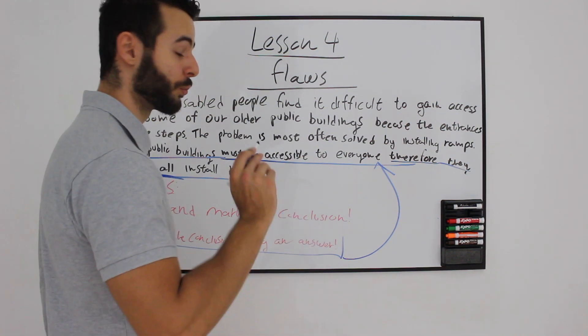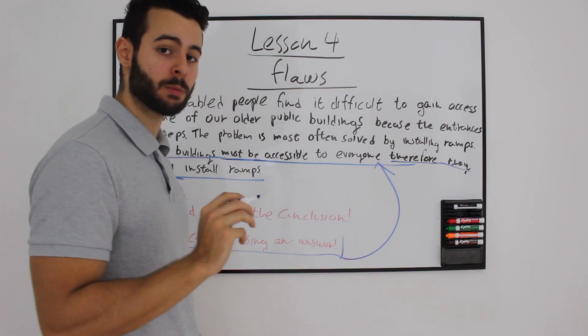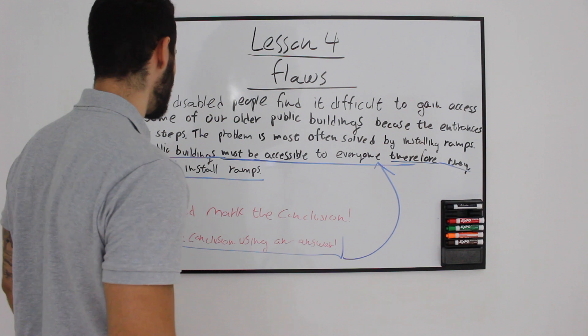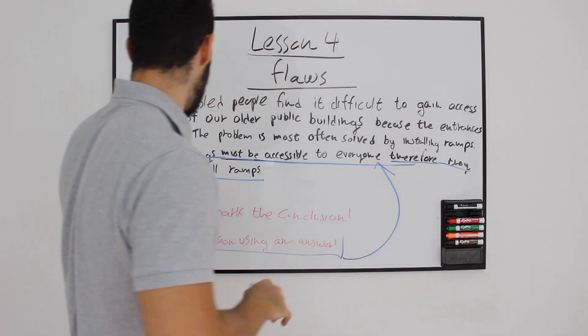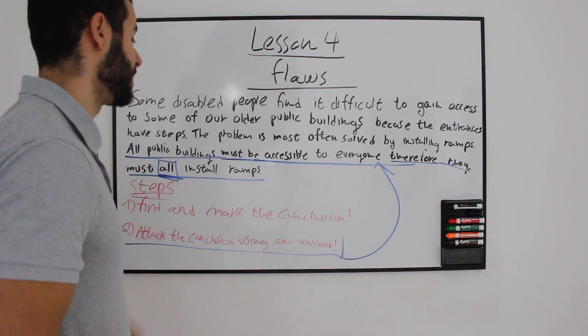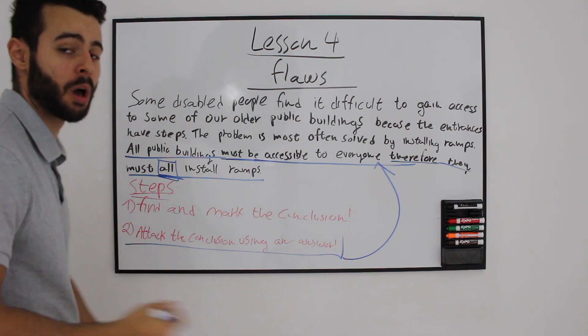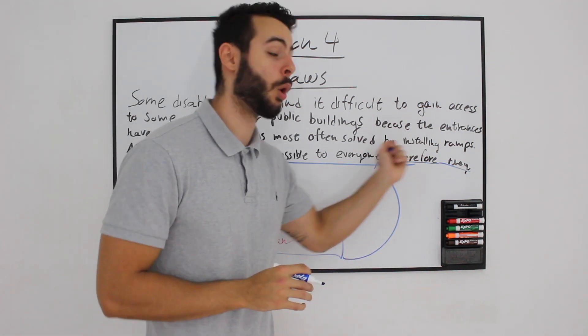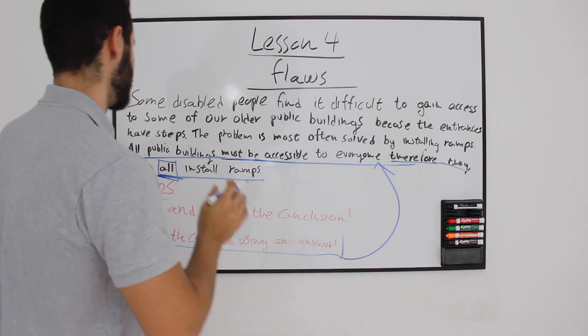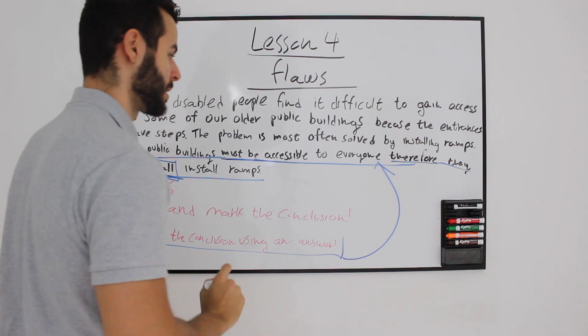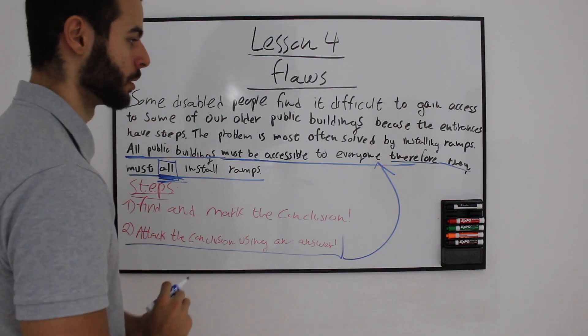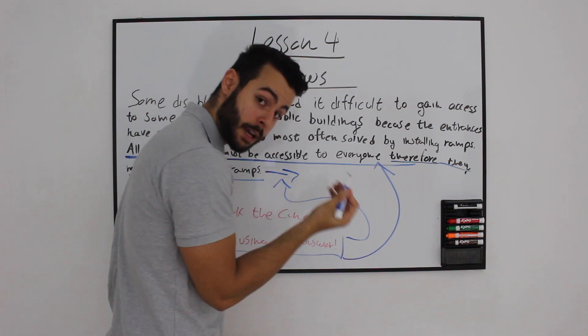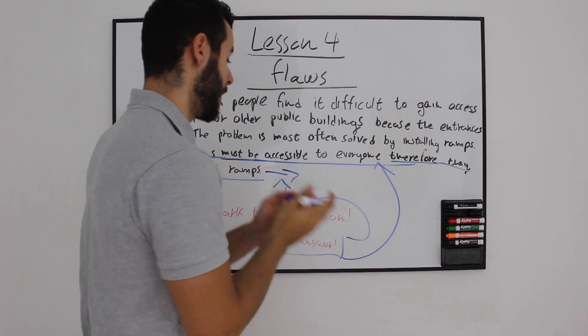Make sure to find and read the conclusion several times before you actually try to attack it because the word all, in this specific paragraph, makes the entire sense. Because without it, if we were talking about some public buildings must be accessible to everyone, therefore, some must install ramps, we couldn't attack the actual statement, the actual conclusion, if they weren't talking about all of the buildings. Because our conclusion is all public buildings must be accessible and all, everyone should install ramps. It doesn't make sense. We can attack it because it doesn't make sense to install ramps because some of them already have access.